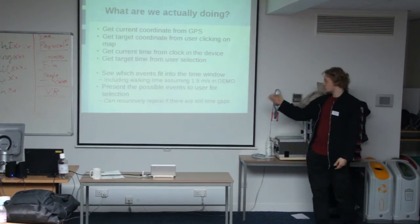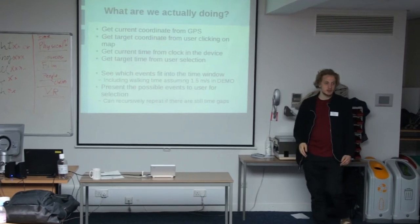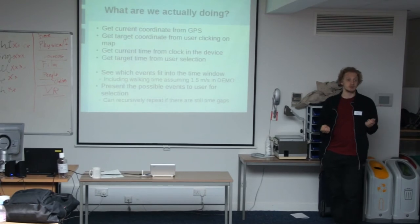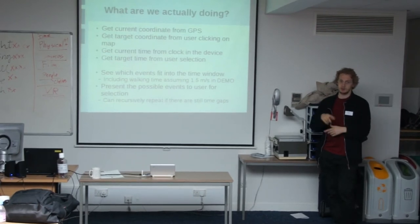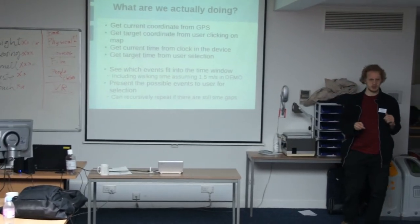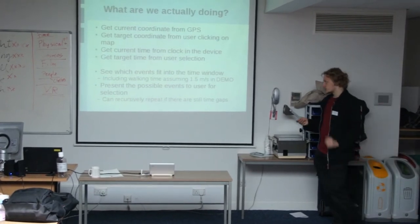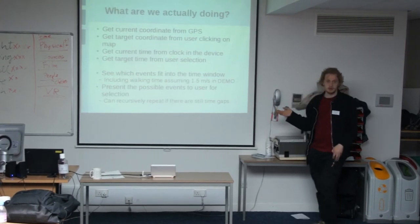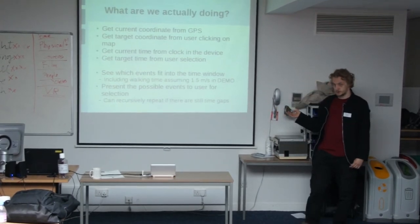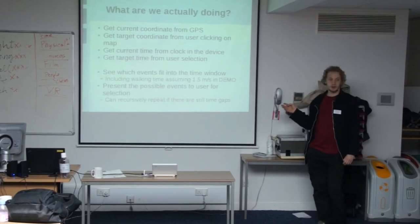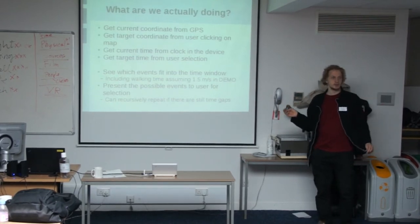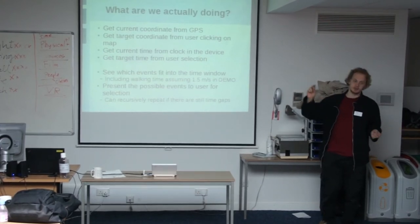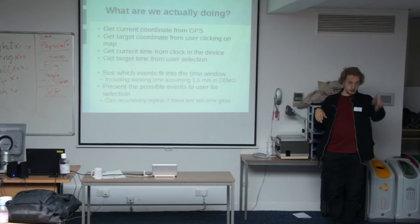In this demo, we assumed a straight-line distance and a walking speed of 1.5 meters per second. In a real application, we would use a much more sophisticated model using path-routers and such. From that, the application should present a list of possible events for user selection - a list given the starting position in time and space and the end position in time and space - and let the user select.